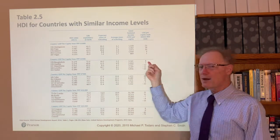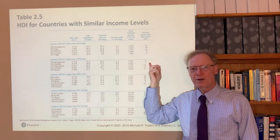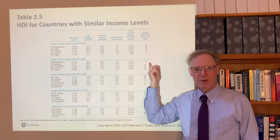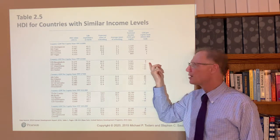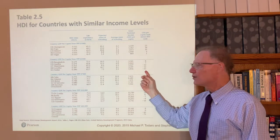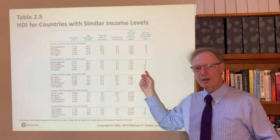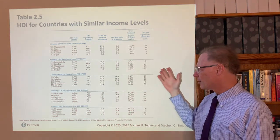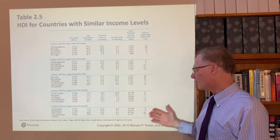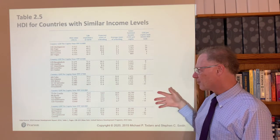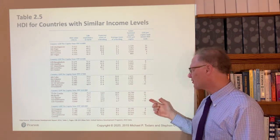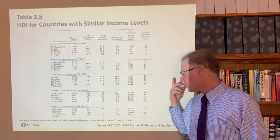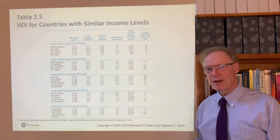For the case of Bangladesh, it's eight points higher than you would predict on the HDI based on income alone. Whereas Sudan is 22 points lower on the Human Development Index than would have been predicted. Among those at $10,000 per capita, Sri Lanka is 21 points higher than you'd predict, whereas Namibia is 18 points lower.